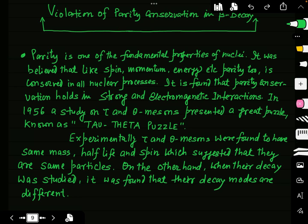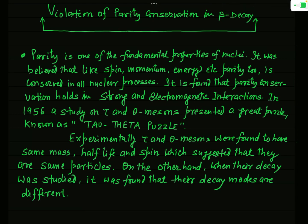After the completion of Fermi theory of beta decay, we are going to deal with a very important problem regarding beta decay. Parity is one of the fundamental properties of nuclei, and it was believed that like spin, momentum, and energy, parity also remains conserved in all nuclear processes. However, there is actually a violation of parity conservation in the process of beta decay, and that is the sole aim of today's lecture.